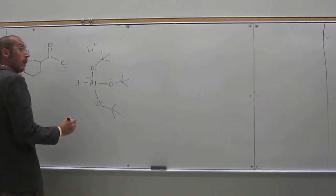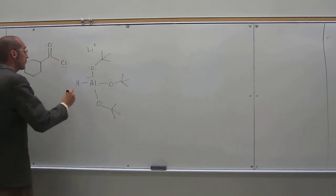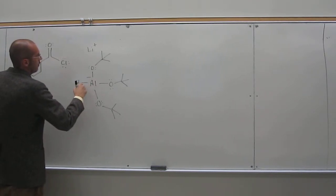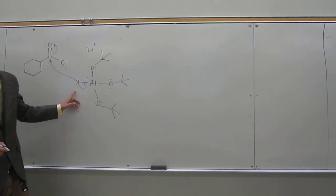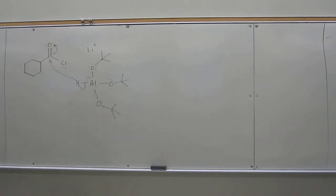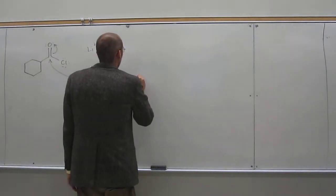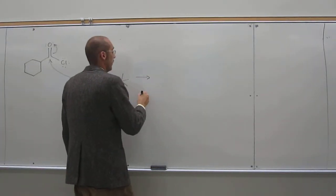So what will happen here is, of course, this hydride is going to be delivered to that carbonyl carbon. So again, I like to draw the arrow through the hydrogen just to show that it's that atom that's being delivered. That's going to be a forward arrow there.